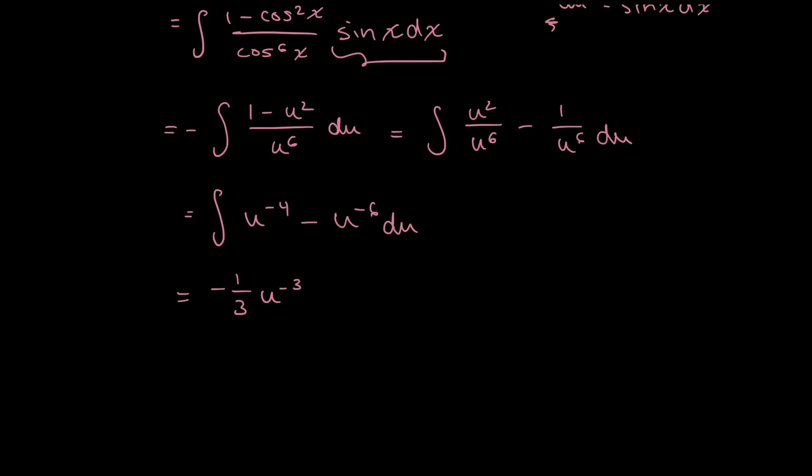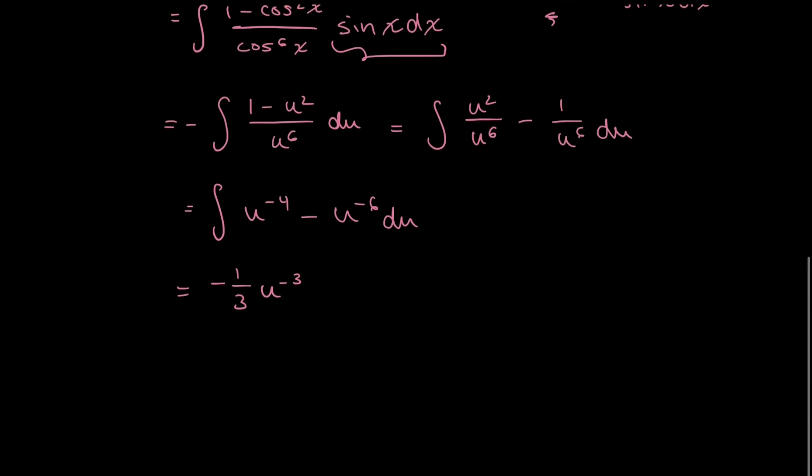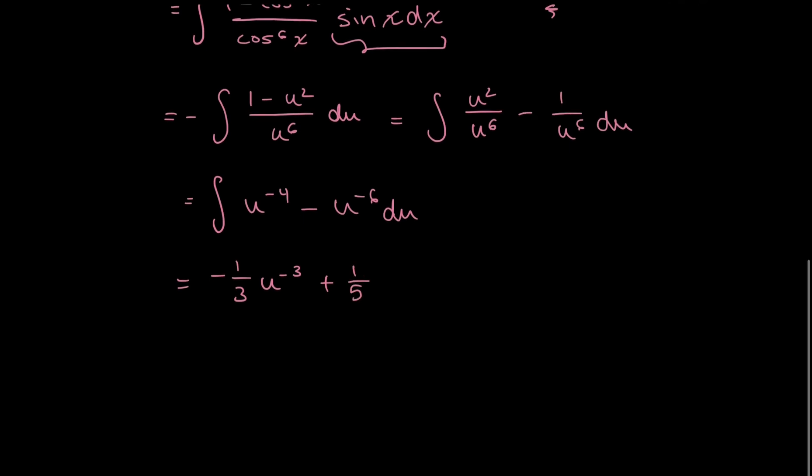same deal here. I'll have minus, and then I'll have another negative, so that becomes plus. 1 over 5 times u to the power of negative 5. And I'm going to add an arbitrary constant, c. You could do this at the end, but I like to make a habit of putting it immediately after I integrate so that I don't forget it.